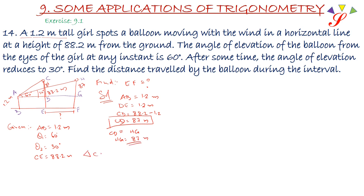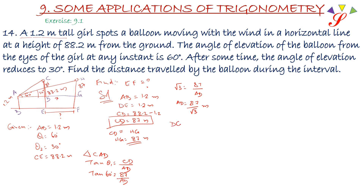Let's take the first triangle CAD. Tan theta 1 equals CD upon AD. Tan 60 equals 87 upon AD. Root 3 equals 87 upon AD. So AD equals 87 upon root 3 meter. Let's say DG is equal to X meter.